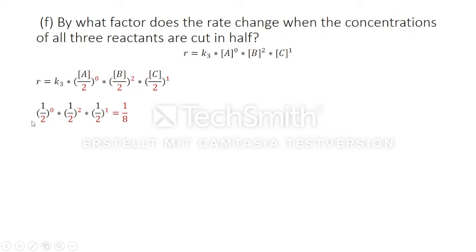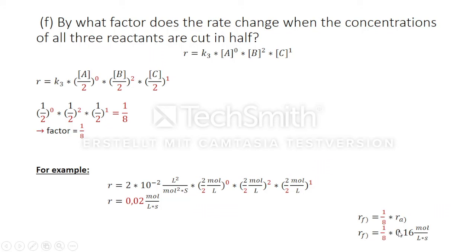So, one half to the power of zero times one half to the power of two times one half to the power of one equals one eighth. The original rate of zero point one six reduces by eight, therefore equal to zero point zero two.